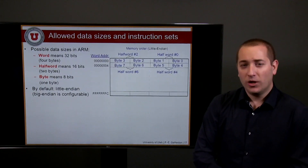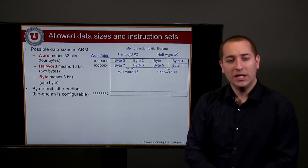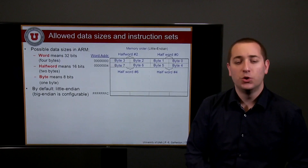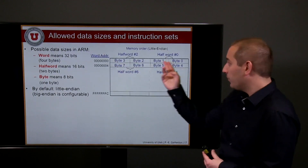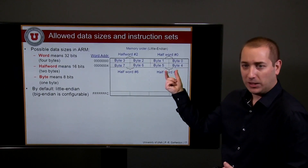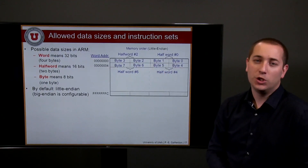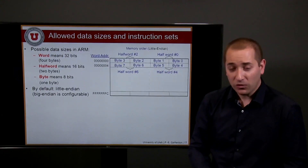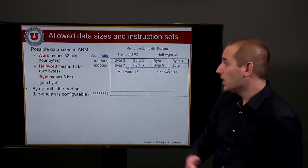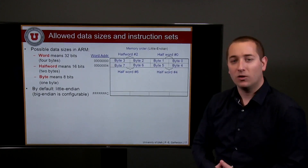ARM has a very specific way of dealing with memory. There are three possible data sizes you can access from and to memory: you can address full 32-bit words, half-words, or bytes directly. We'll discuss in a future lecture how this influences your memory access, and how you can end up with segmentation faults and critical errors on your microcontroller if you do not respect the so-called memory alignment of your data.